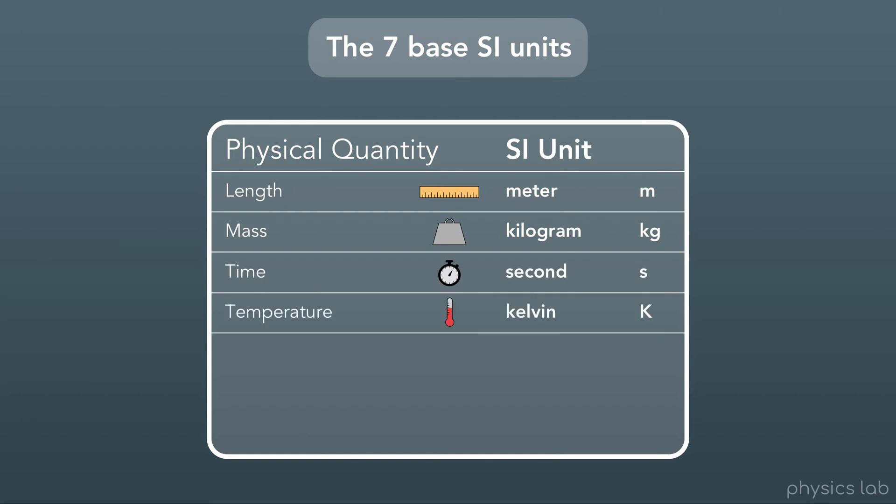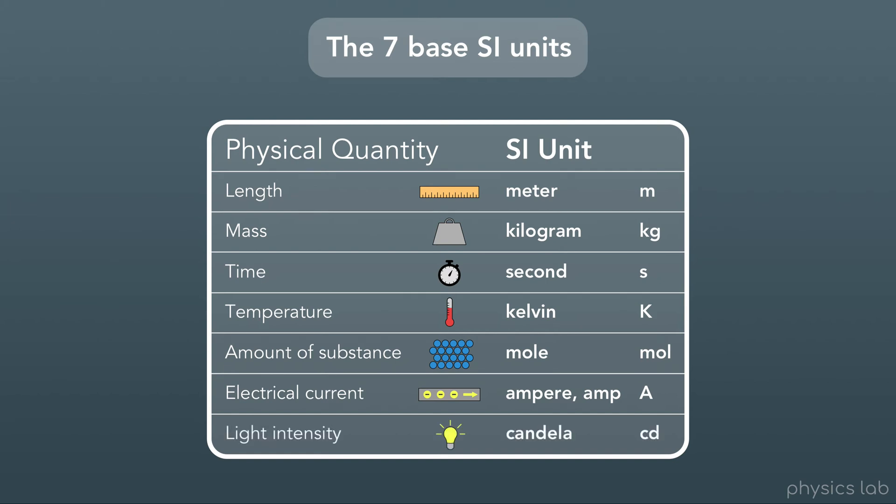For temperature, we use kelvin, abbreviated capital K. For amount of substance, we use moles, or mol for short. For electrical current, we use amperes, commonly referred to as amps, also abbreviated as capital A. And for light intensity, we use candelas, abbreviated cd.